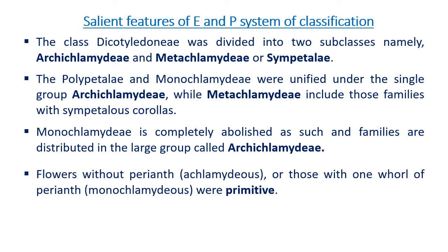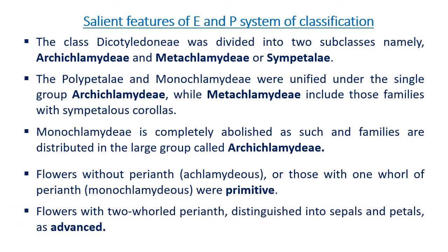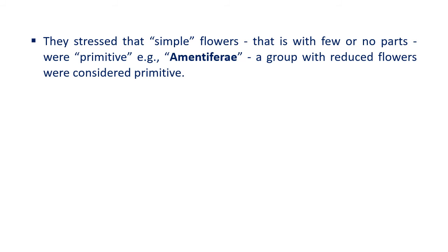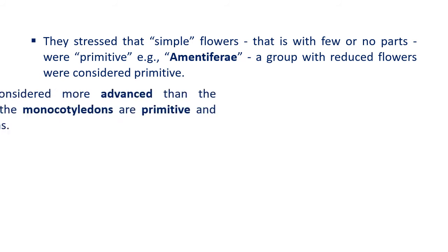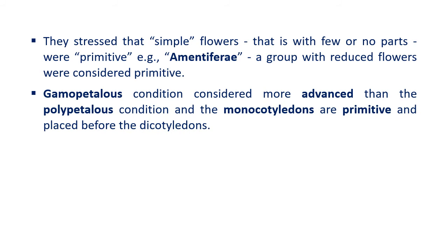The Monochlamydeae of Bentham and Hooker is completely abolished, and their families have been distributed in Archichlamydeae. Flowers without perianth, or those with one whorl of perianth, were considered primitive. Flowers with two whorls of perianth distinguished into sepals and petals are considered an advanced character. They stressed that simple flowers with few or no parts were primitive — for example, Amentiferae, a group with reduced flowers, were considered primitive. The gamopetalous condition is considered more advanced than the polypetalous condition.